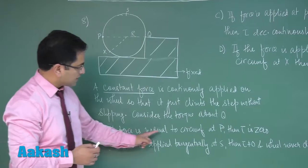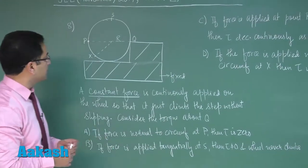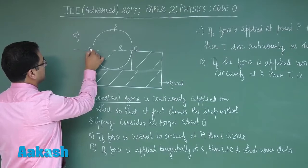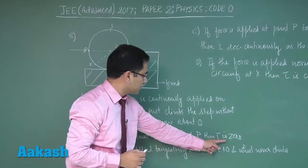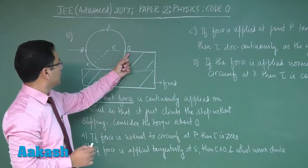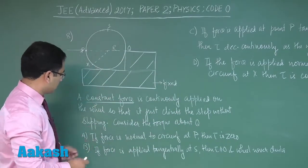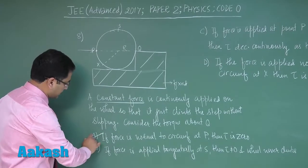If force is normal to circumference at P, so normal to circumference at P would be this force. The torque is zero, torque of course about Q, and that is a straightforward answer. The torque about Q would be zero.